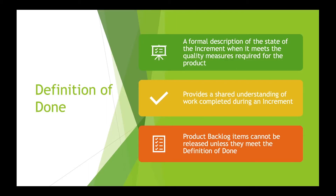Done-ness is a critical component of the Scrum framework in that the ultimate goal is to frequently deliver value to the customer. In order to represent delivered value, functionality must be completely done. The Scrum framework requires a formal definition of done describing the state of a sprint backlog item when it meets the required quality measures. The definition of done communicates a shared understanding of when a sprint backlog item is complete. A sprint backlog item cannot be presented at the sprint review or included in a release until it meets the definition of done.